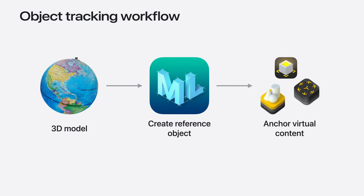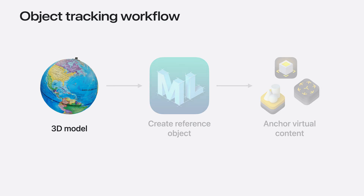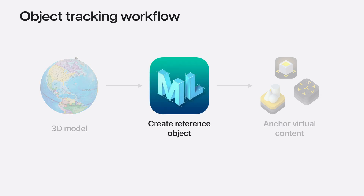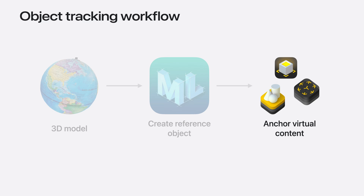This is only one example I created using an object from my collection, but I'm sure you have objects of your own that you can bring to life too. We've made it really simple to use object tracking in your app — there are just three steps. First, provide a 3D model representing the real-world object you want to track. You use it to train a machine learning model in the CreateML app, and the result is a reference object, a new file type we're introducing for object tracking this year. Finally, you use this reference object in your app to anchor your virtual content and create your experience.